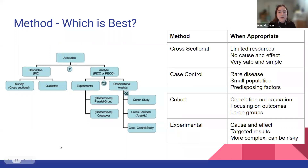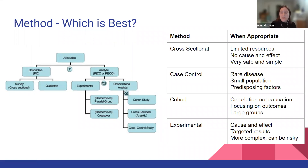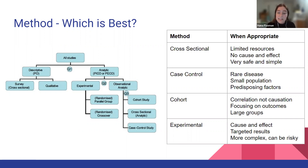Finally, there's a cross-sectional study where you're collecting data all at one point in time. This can be done through a survey — giving it out at a clinic and getting data back at just one time point — or a chart review where you're looking through a patient's electronic medical record. This is good because you can do it easily with limited resources and it's very safe and simple for participants. However, it can be harder to look at cause and effect since you're only looking at one time point.